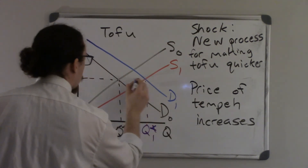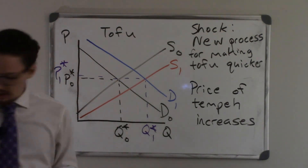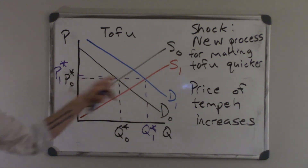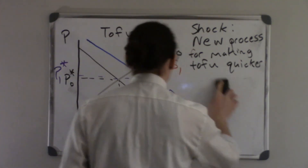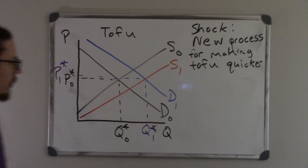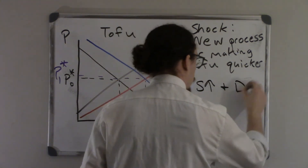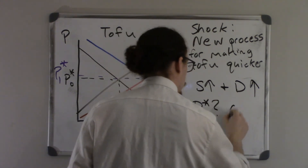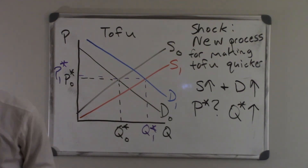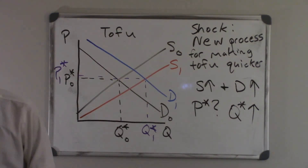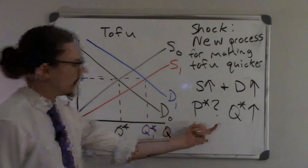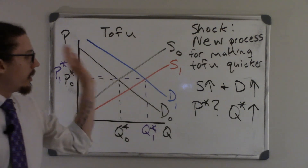If the price of a substitute increases, the demand for the good we're looking at increases. So the price of tempeh increases, some consumers switch to eating tofu or eating more tofu because it is cheaper. We get our new equilibrium. Once again, the way I draw these most of the time, the ambiguous one looks like they're right on top of each other — but that's not the only thing we should look for. This is an increase in supply and an increase in demand, and just like our chart says, we get an ambiguous equilibrium price and an increase in equilibrium quantity.